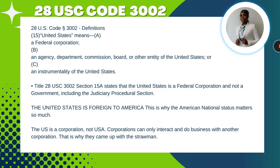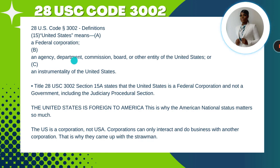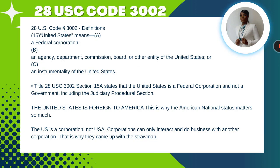Now, pursuant to 28 USC 3002, the United States is defined as a corporation. In the definition section, 28 USC 3002 defines the United States — that's very important. Number 15 states the United States means a federal corporation, an agency, department, commission, board, or other entity of the United States, or an instrumentality of the United States.